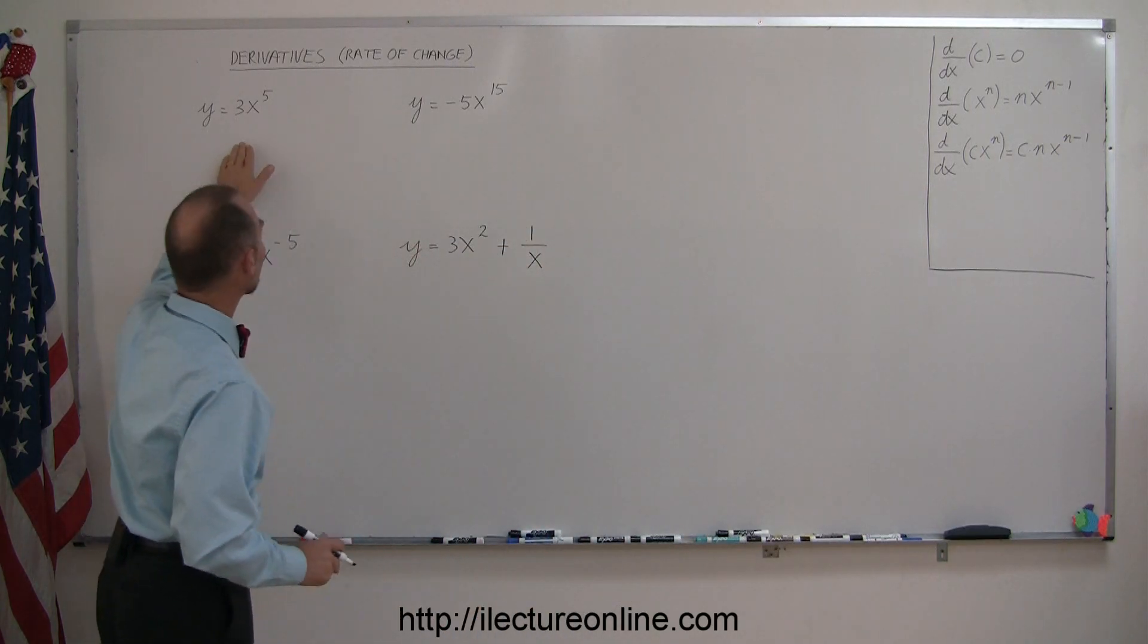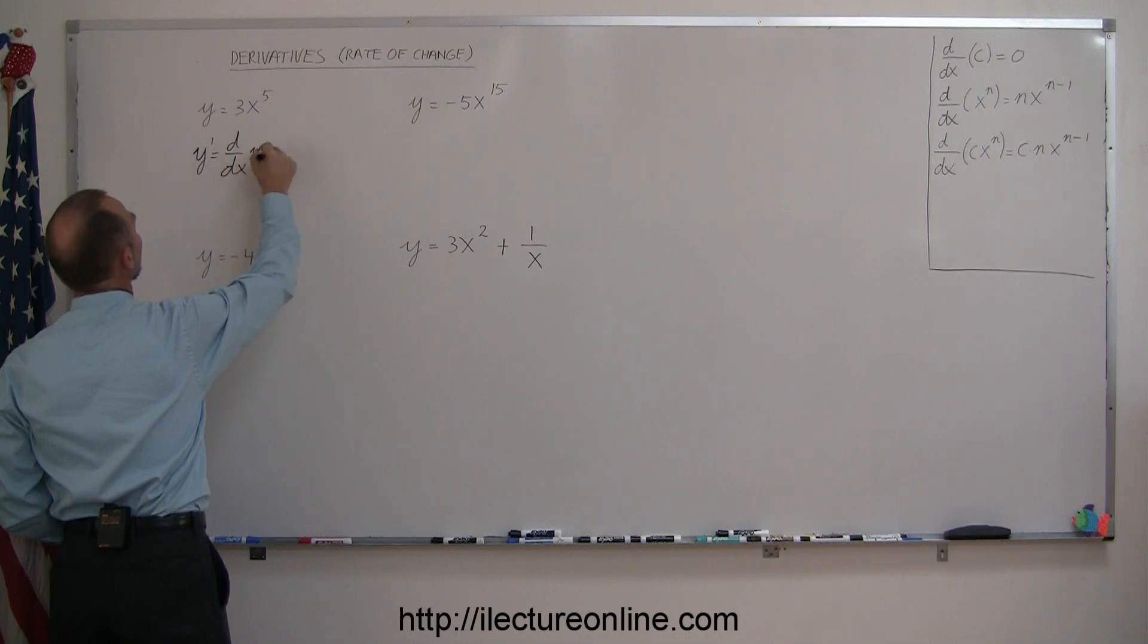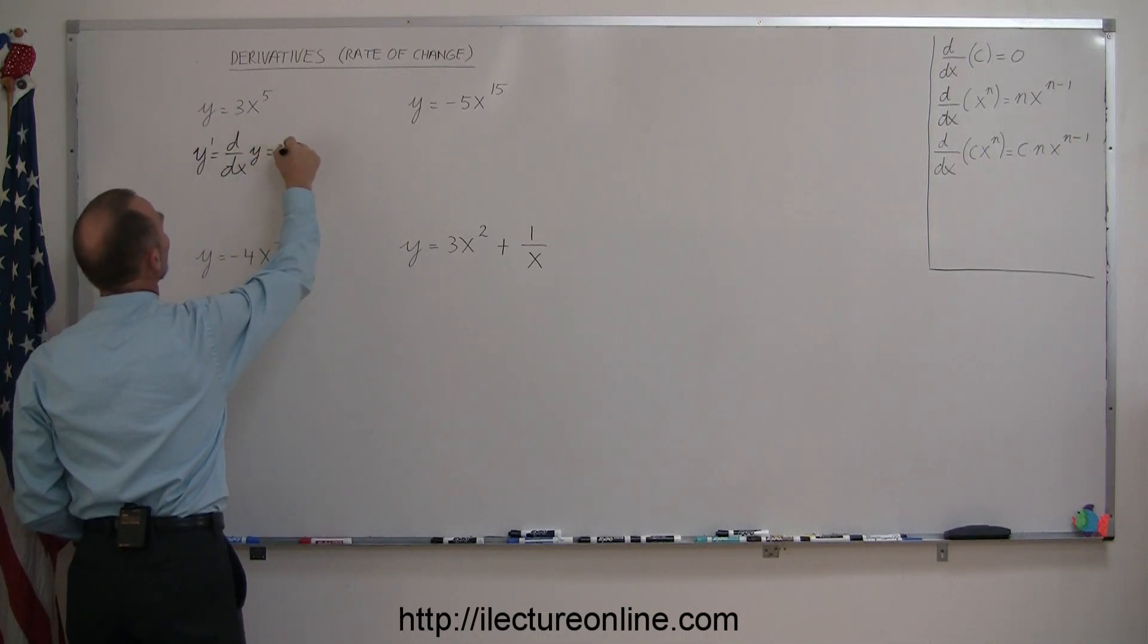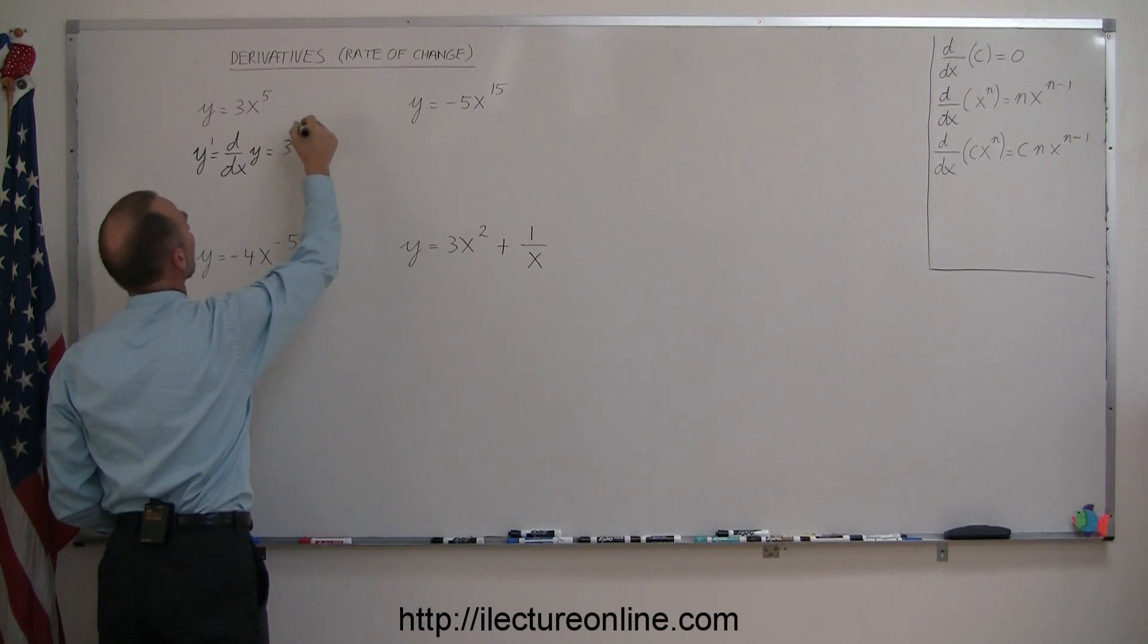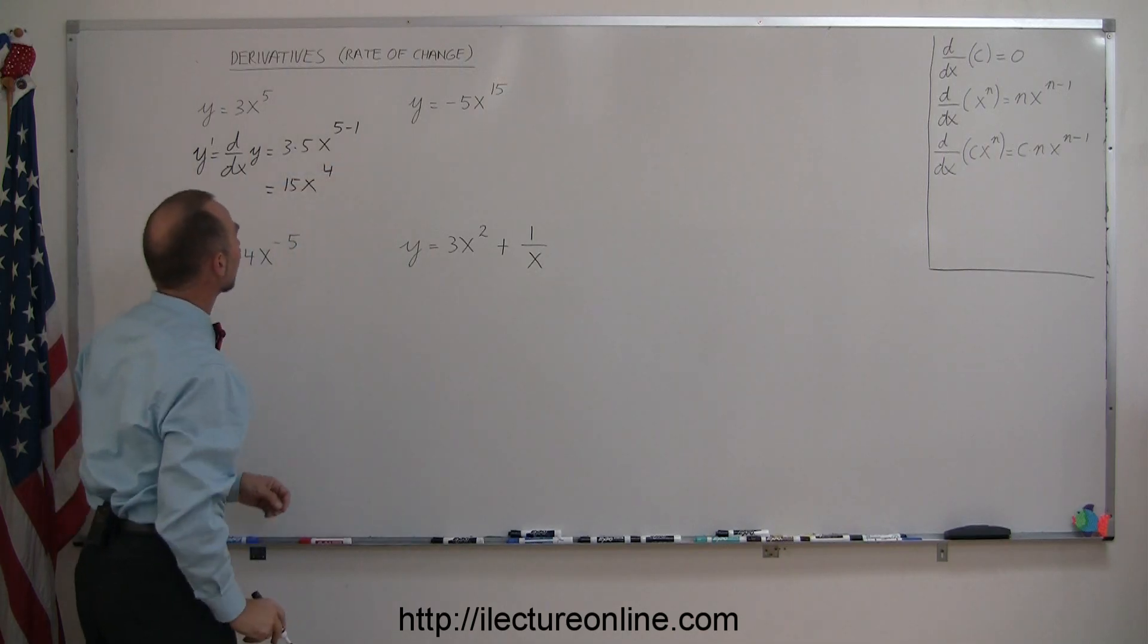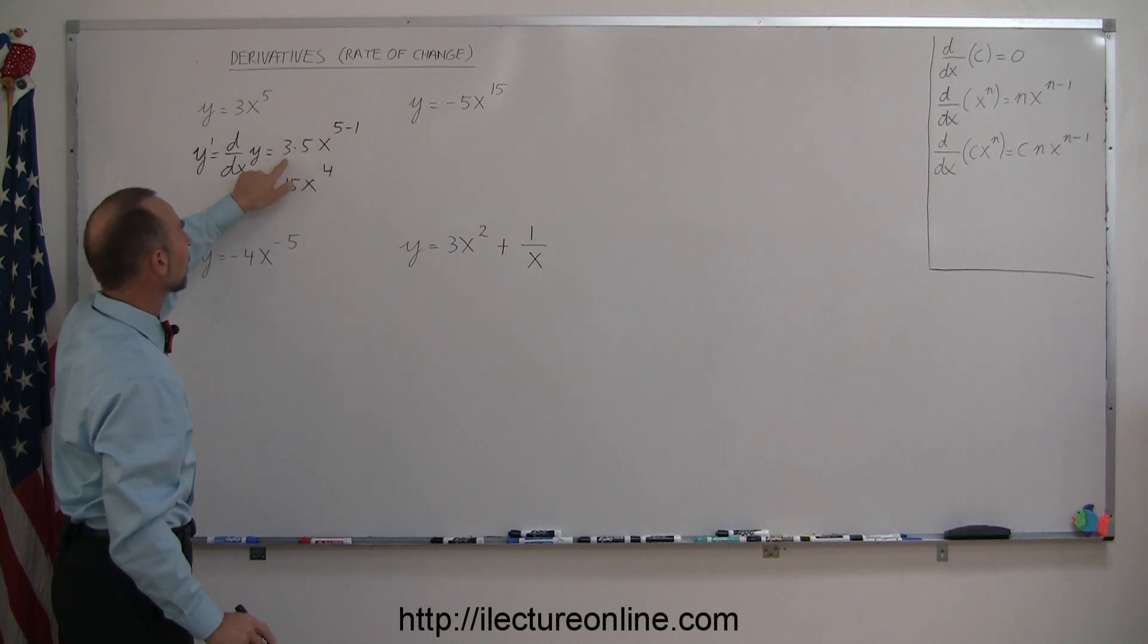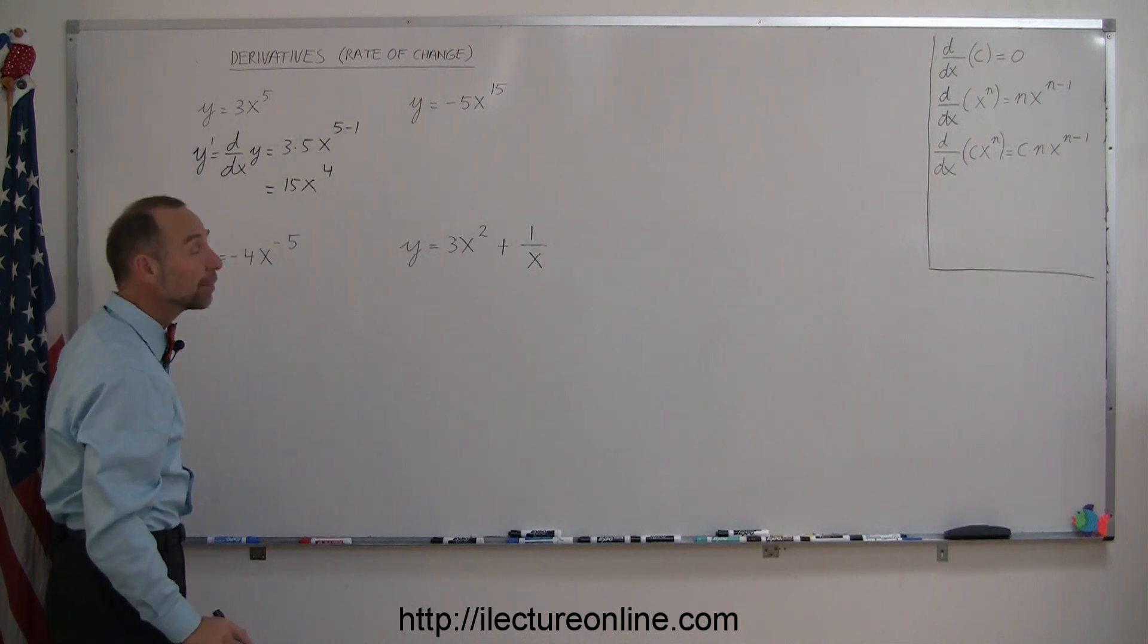So looking at this problem and the general example there, we can say that y prime, which is equal to the derivative d/dx of y, is equal to 3 times 5, we bring down the exponent, times x to the exponent minus 1, and so this equals 15x to the fourth power. So again, the rule is that you bring the exponent down, multiply it with the constant, and then subtract 1 from the exponent.